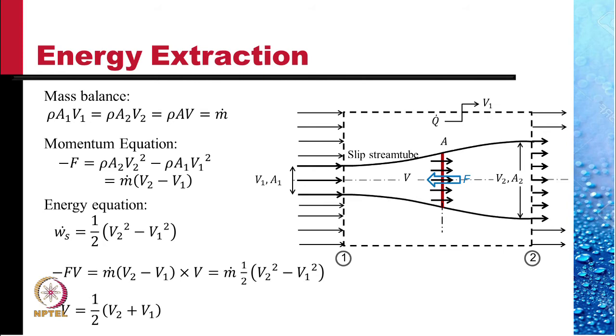This gives us the value of velocity at the disk to be the average of the velocity far upstream and far downstream.